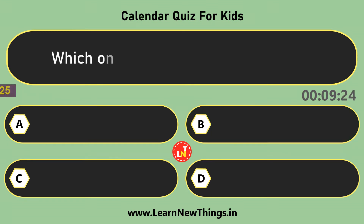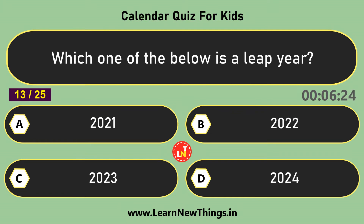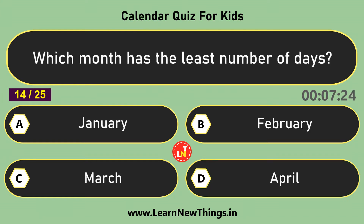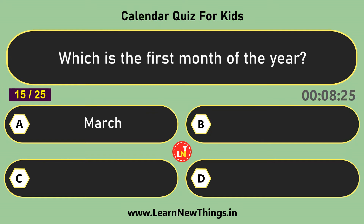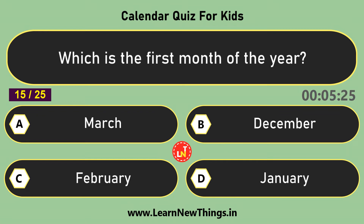Which one of the below is a leap year? 2024. Which month has the fewest days? February. Which is the first month of the year? January.